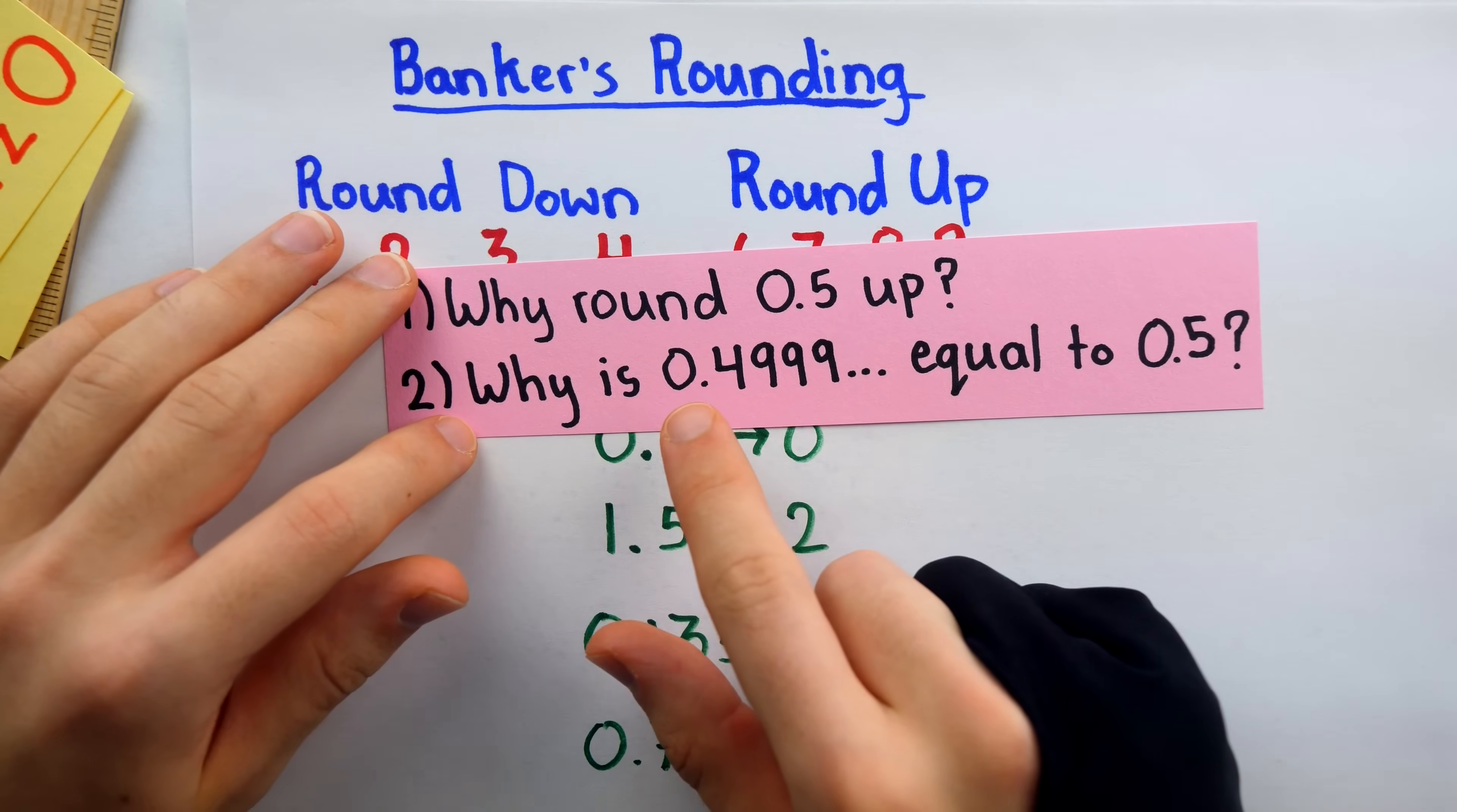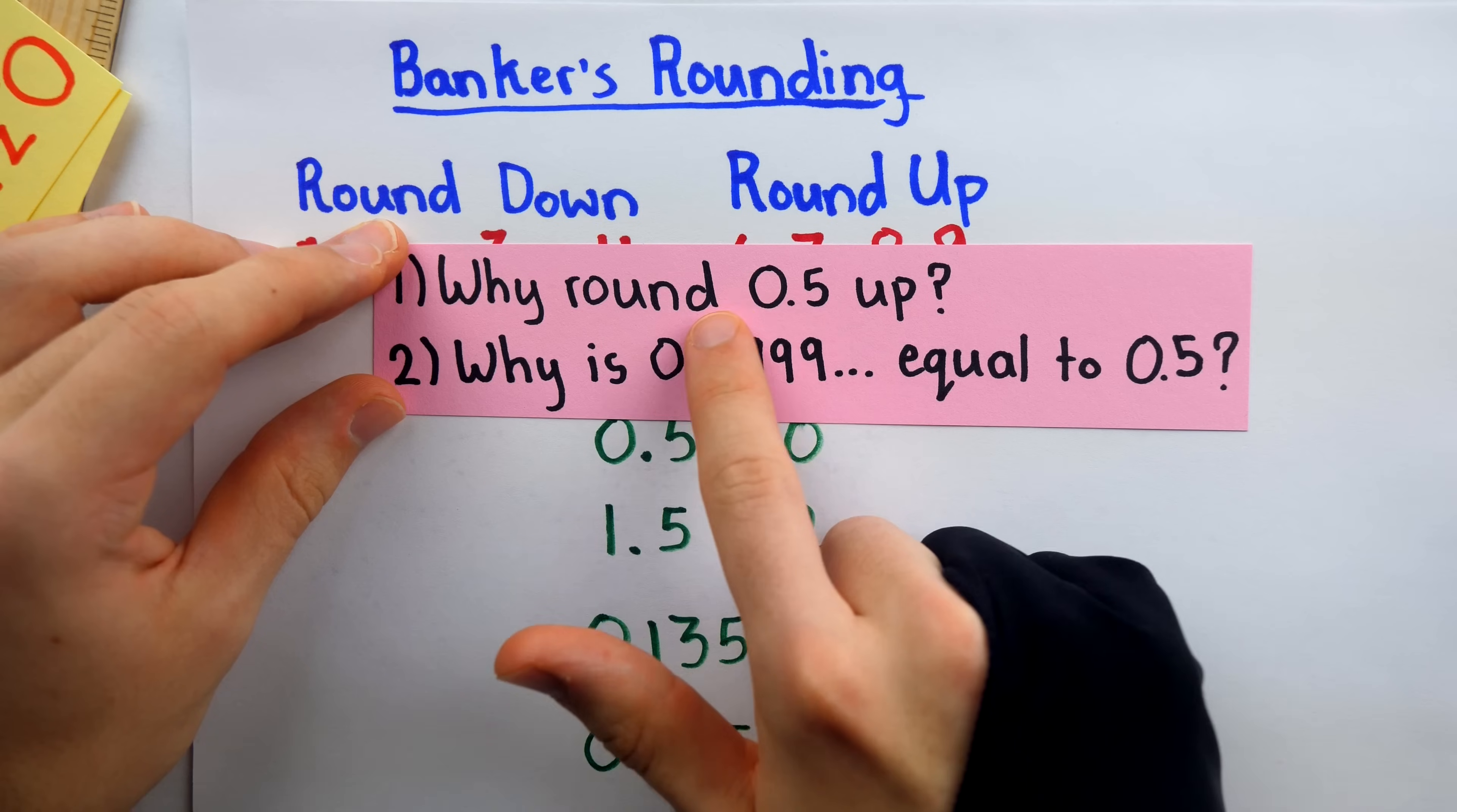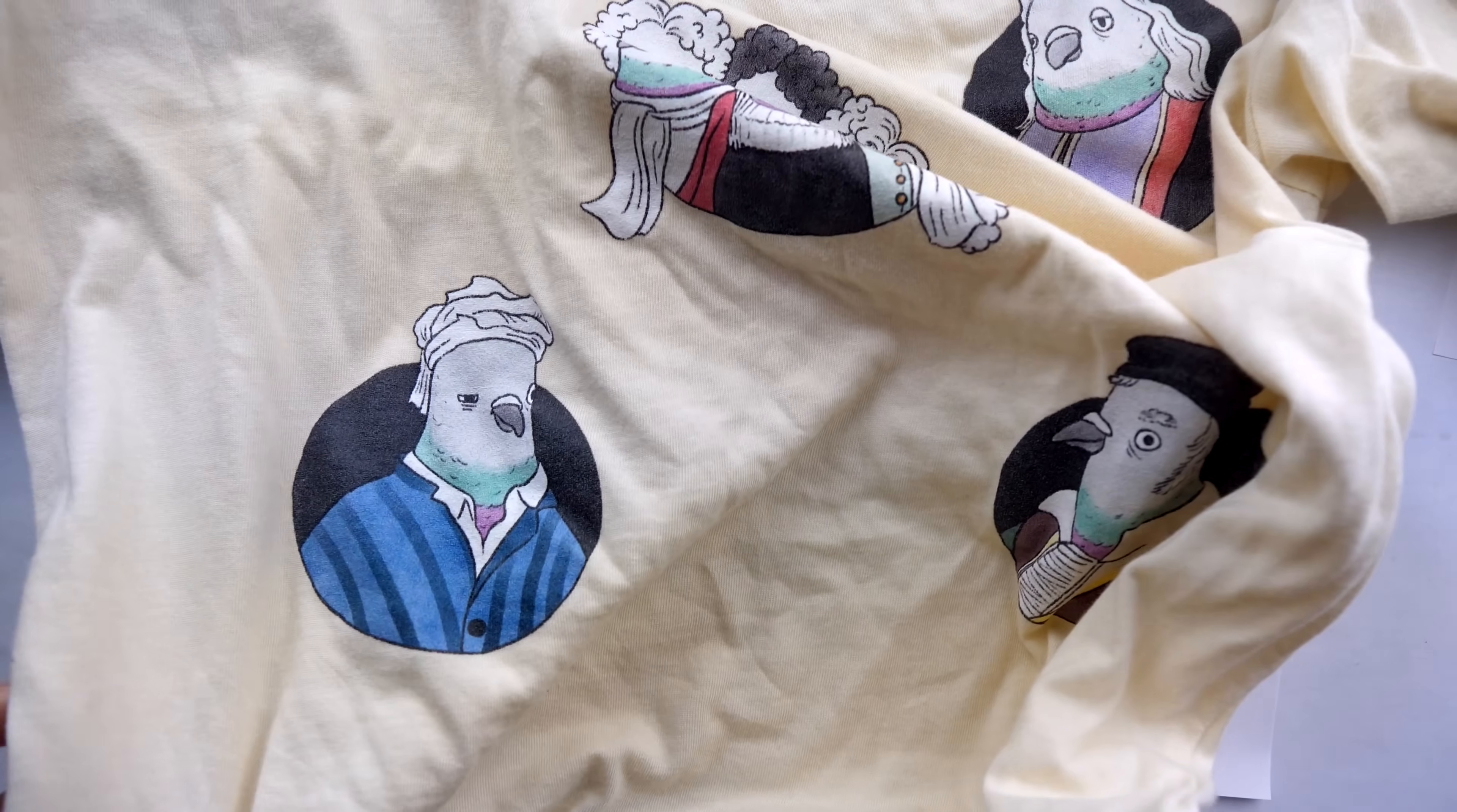But assuming we do round it up, and 0.4999 repeating is equal to 0.5, then yes, it should be rounded up to 1. But how is it that 0.4999 repeating is equal to 0.5? And on another note, how is it that this shirt with cartoon pigeons on it is a math shirt? Well, if you know, you know.